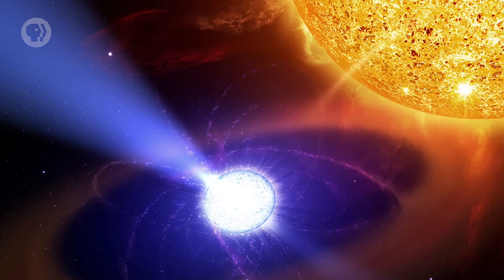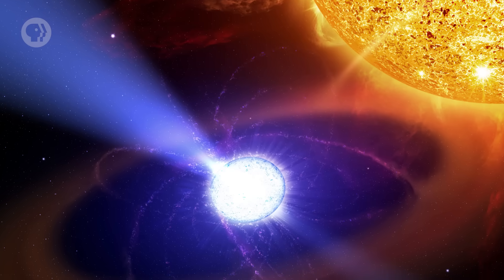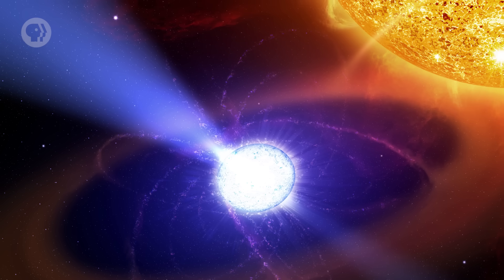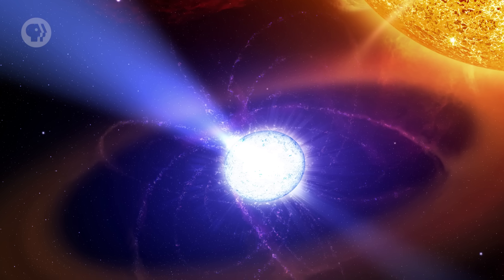As we've seen over the past few episodes, a lot of really epic stuff happens when a star dies. If the star's core is less than 1.4 times the mass of the Sun, it becomes a white dwarf, a very hot ball of super-compressed matter about the size of the Earth.